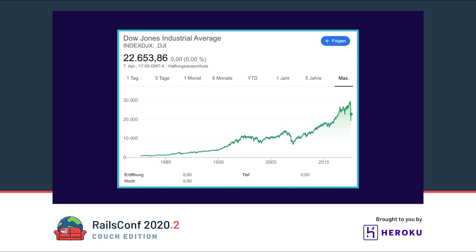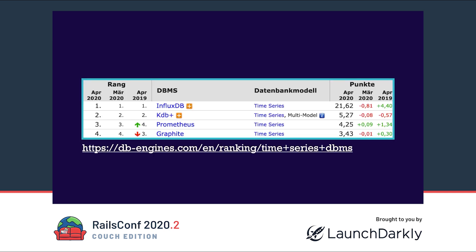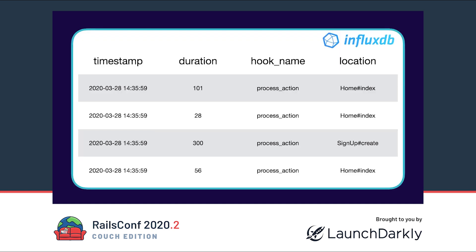Time series databases are nothing new — they already exist since 30 or 40 years, mostly in the finance industry. One use case is tracking the price of a stock over time. The reason they got very popular in recent years is the Internet of Things: we now have many devices with sensors constantly writing results like temperature or humidity. A few popular time series databases you might have heard about are InfluxDB, Prometheus, or Graphite. For the rest of the talk I will use InfluxDB.